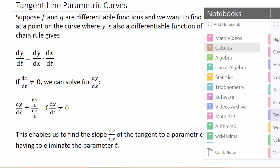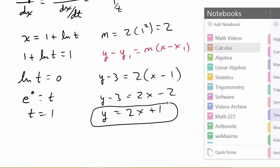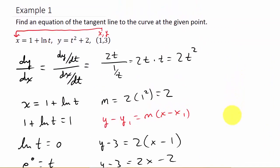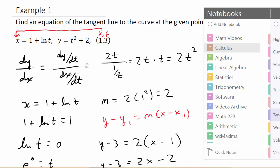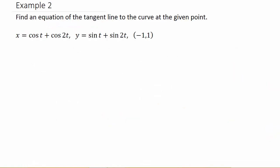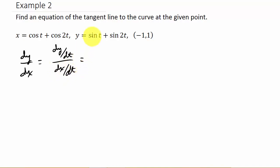Let's take a look at this example. If this is the first video you're watching, you can go watch my first example where I worked that problem — I've already done that video. So this one says: find an equation of the tangent line to the curve at the given point. The first thing we need to do is find dy/dx, which equals dy/dt over dx/dt — the derivative of y with respect to t over the derivative of x with respect to t.